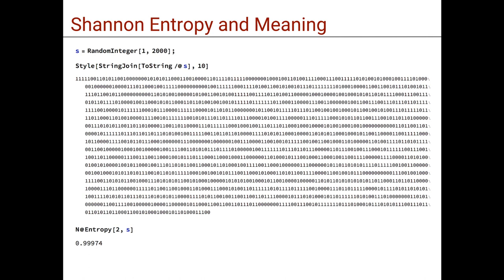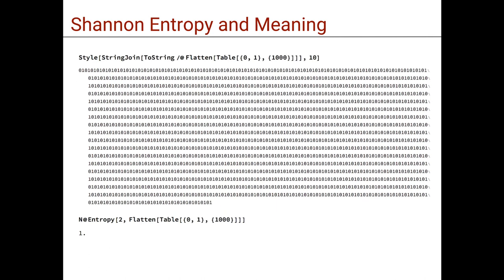we have that a pseudo-random sequence of two thousand zeros and ones produced by the function random integer in the Wolfram language has almost the same Shannon entropy than the highly structured sequence of repeating zero, one, a thousand times.